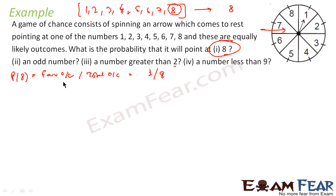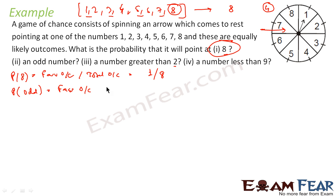First part is solved. Now, probability that it points at an odd number. How many odd numbers are there? 1, 3, 5, 7 — so there are 4 odd numbers. Same formula: favorable outcome by total outcome. Favorable outcome is 4, total outcome is 8. So 4 by 8, that is 1 by 2.